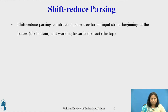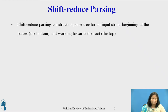Shift-Reduce parsing constructs a parse tree for an input string beginning at the leaves and working up towards the root. We can think of this process as one of reducing a string w to the start symbol of a grammar. At each reduction step, a particular substring matching the right side of a production is replaced by the symbol on the left side of that production. If the substring is chosen correctly at each step, a rightmost derivation in reverse is traced out.